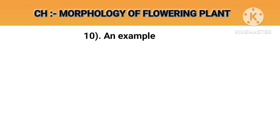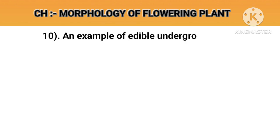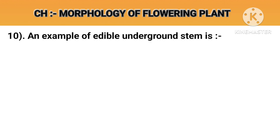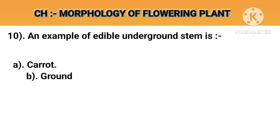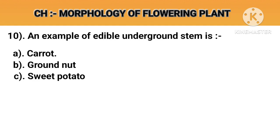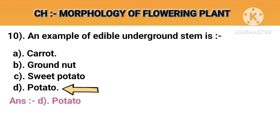Question number 10. An example of edible underground stem is. Option A: Carrot. Option B: Groundnut. Option C: Sweet potato. Option D: Potato. Answer D: Potato.